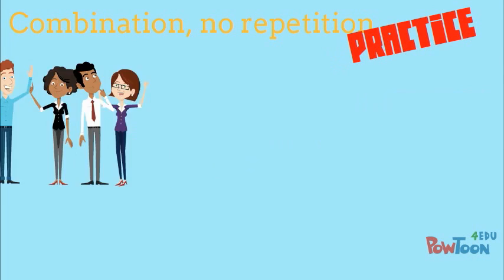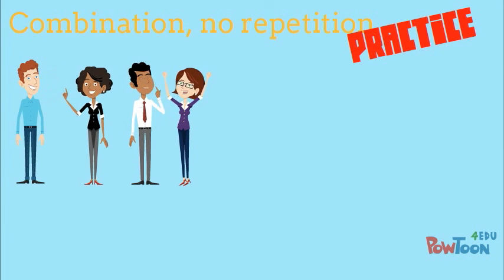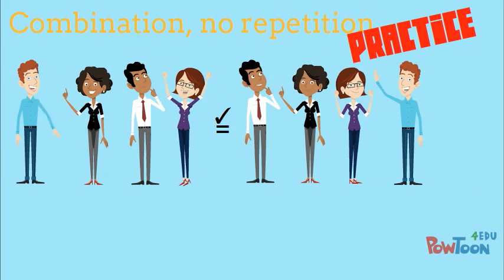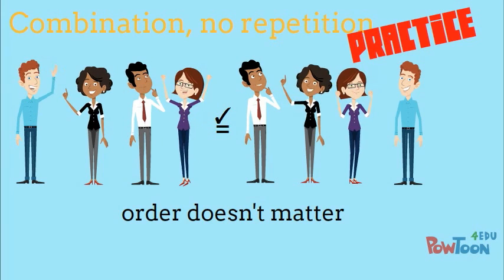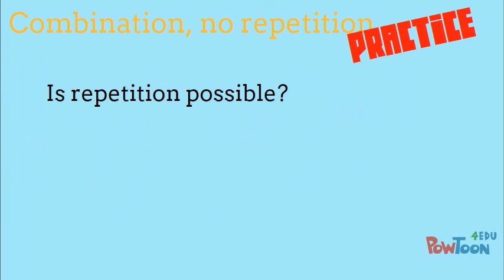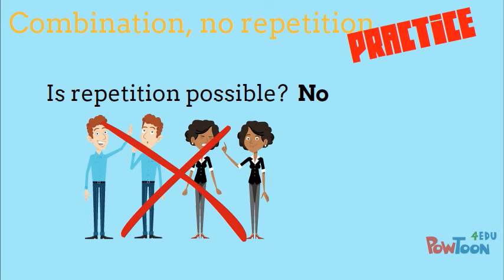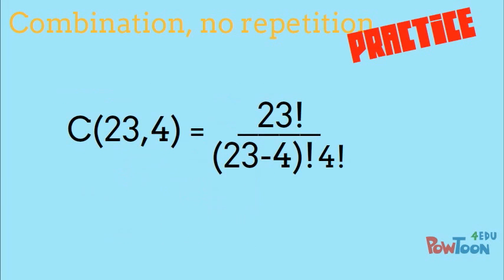Answer. Is a team with Bob, Sally, Greg, and Stacy the same as a team with Greg, Sally, Stacy, and Bob? Yes. We've confirmed that order doesn't matter. Is repetition possible? No. We can't choose the same person twice for the same team. So we have a combination 23 choose 4, which is 23 factorial divided by 23 minus 4 factorial times 4 factorial. This gives us 8,855 possible teams that could be formed from a group of 23 people.